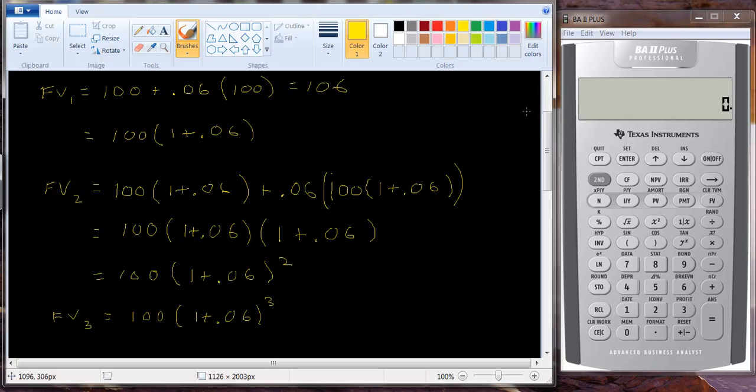So if we want to generalize this, remember that this hundred, it doesn't matter what the original amount of the deposit is. If it's six percent it's always going to be multiplied by this term if we want to find the future value in year three.